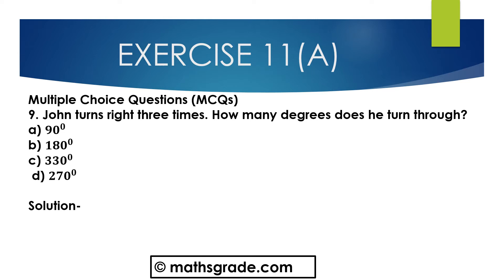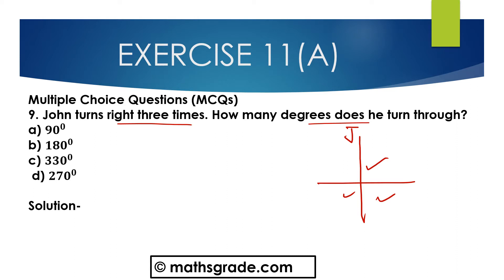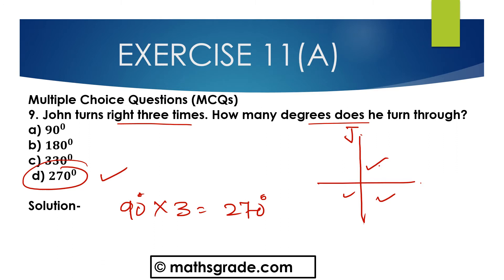Question number 9, Multiple choice questions. John turns right three times. How many degrees does he turn? Suppose John is here — right three times: one time, two times, three times. Each right turn is 90 degrees. North to East is 90 degrees, East to South is 90 degrees, South to West is 90 degrees. So 90 plus 90 plus 90 is 270 degrees. Option D is the correct option.